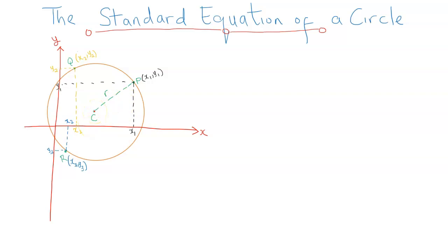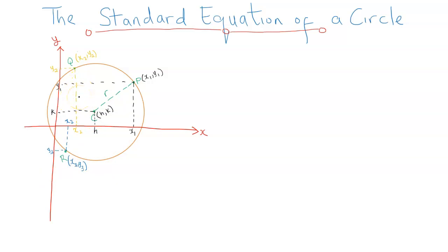The same can be done for the center. To differentiate it from the points on the boundary, I'll call the X coordinate H and the Y coordinate K. So the coordinate of the center is (H, K). This circle is defined by two parameters: the first is a point on the circle itself, and the second is the center. Every point on the circle is related to the center in a fixed way — and that's the radius.